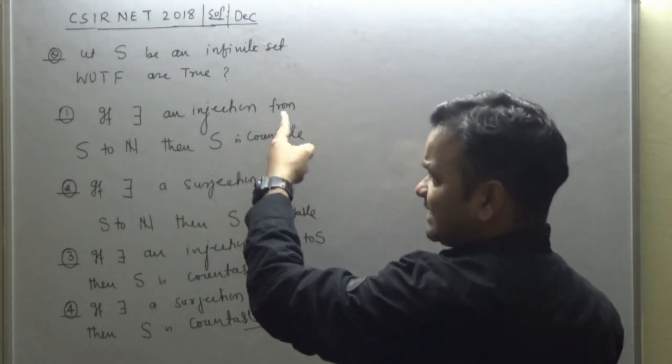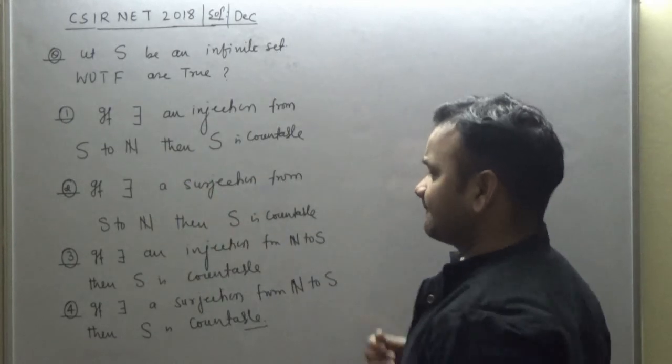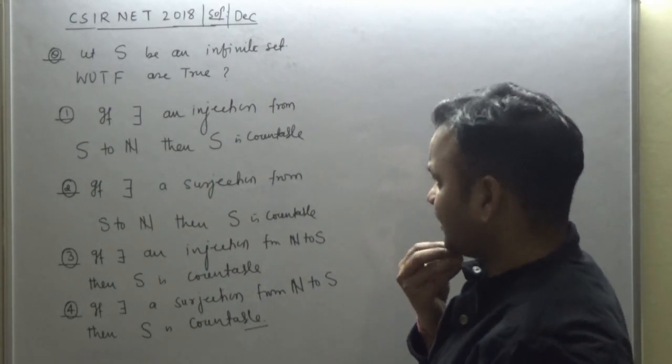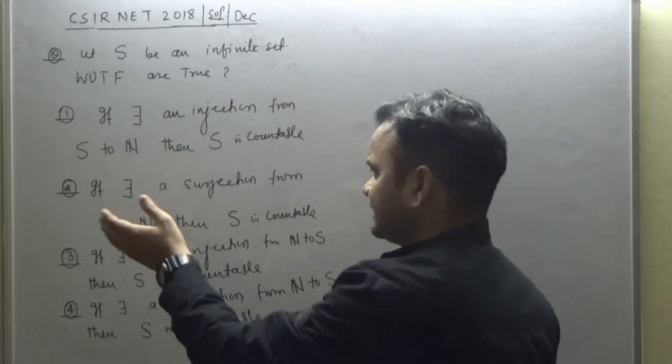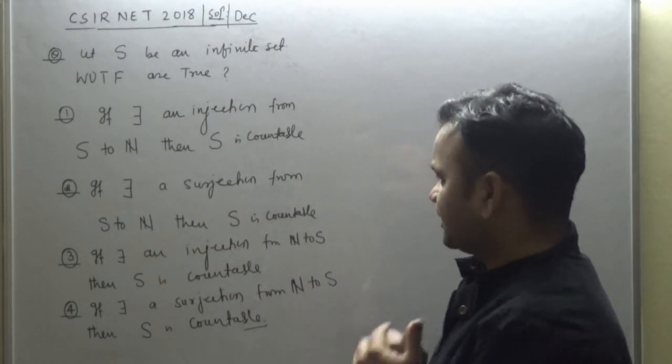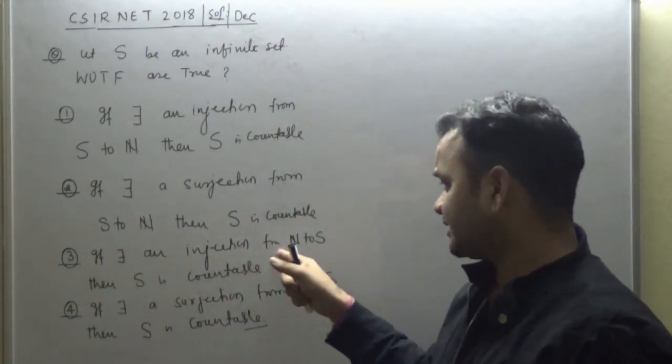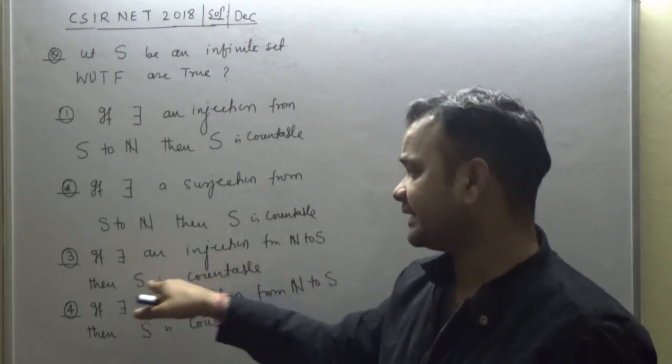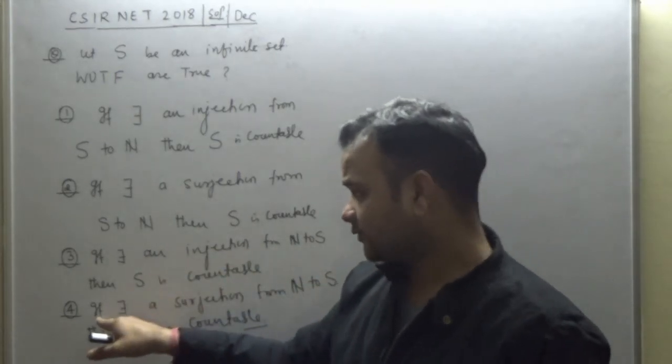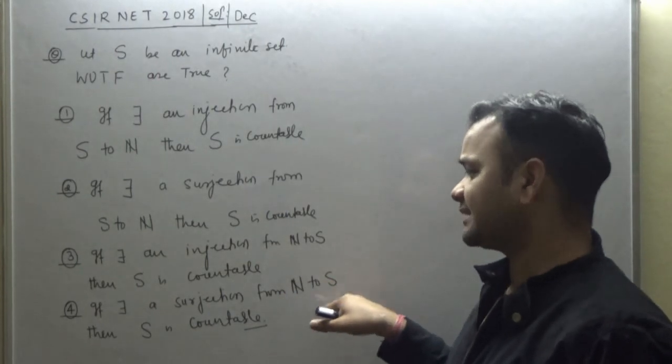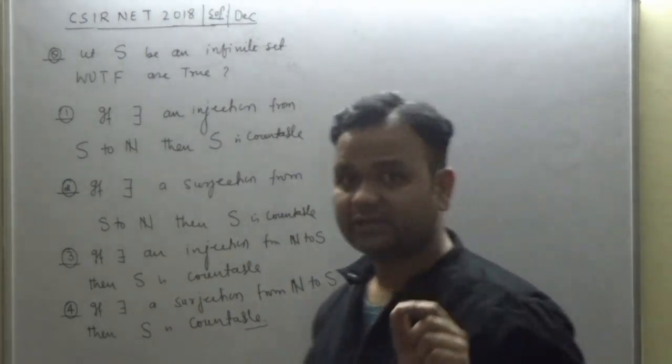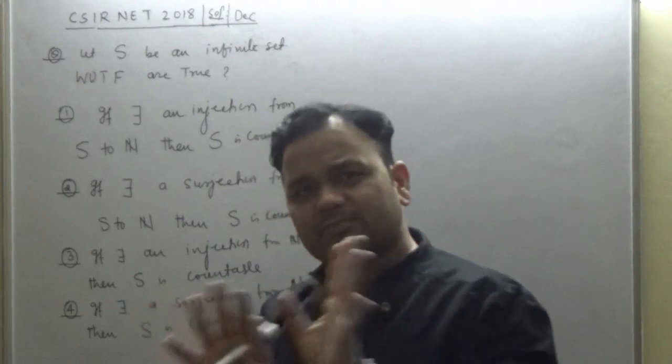First, if there exists an injection from S to N, then S is countable. Second, if there exists a surjection from S to N, then S is countable. Third, if there exists an injection from N to S, then S is countable. Fourth, if there exists a surjection from N to S, then S is countable.